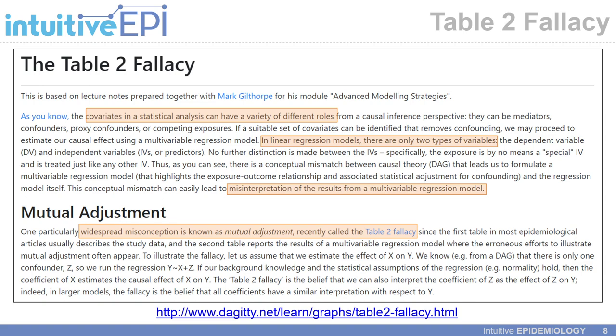They also talk about mutual adjustment, recently called the Table 2 fallacy, which I will dive into later in the slides.